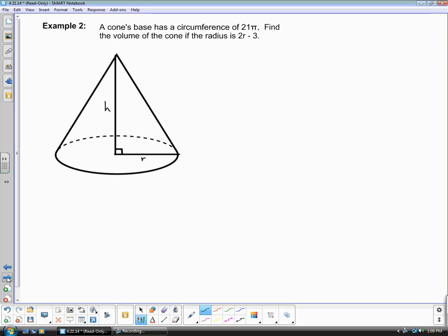The next example. A cone's base has a circumference of 21 pi. So that circular base has a circumference of 21 pi. If you remember back from today's lesson, the circumference was found by taking 2 pi r or diameter pi.